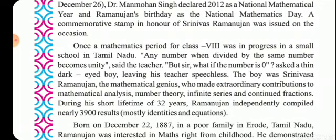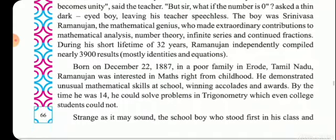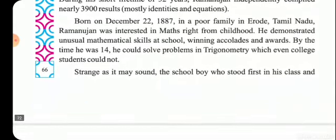During his short lifetime of 32 years, Ramanujan independently compiled nearly 3,900 results — equations and identities, most of which he solved himself. He accomplished an enormous amount of work in those years.